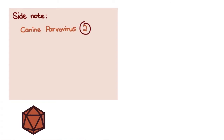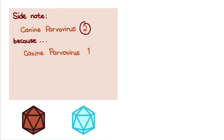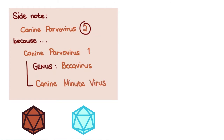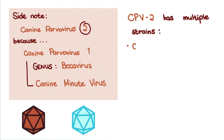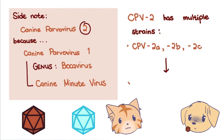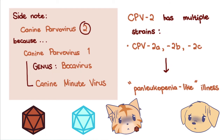Side note: it is called canine parvovirus 2 because there was a previously described canine parvovirus 1, now classified in a different genus — canine bocavirus, also called canine minute virus — which we will not go into in this video. Canine parvovirus 2 has multiple strains, some of which, such as CPV-2A, 2B, and 2C, can cause a disease similar to feline panleukopenia in cats.